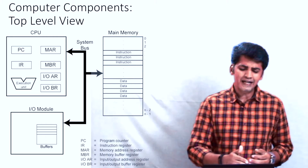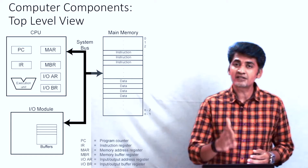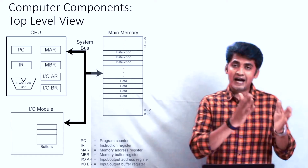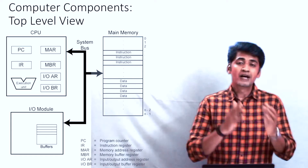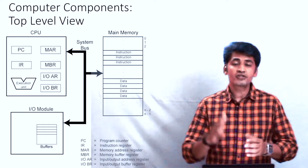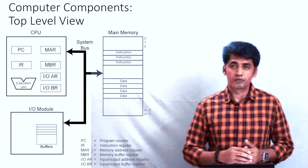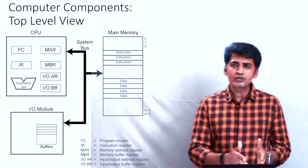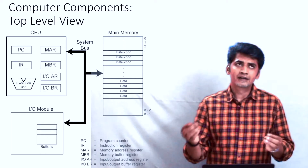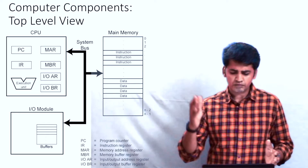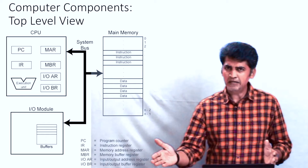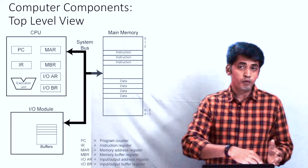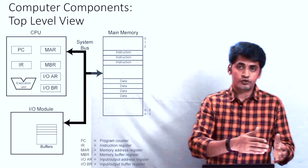For execution you need the system bus. The system bus is the collection of the address bus, the data bus, and the control bus. It is used to transfer data between the main memory, the IO module, and the processor.